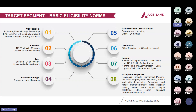Please pay attention to this slide — this is the basic eligibility norm for SBB, which remains almost the same throughout our product offerings. First is constitution: individuals, proprietorship, partnership, etc. Then turnover from 30 lakhs to 30 crores. Age norms: for secured products, 21 to 70 years; for unsecured, 24 to 65 years. Business vintage: 3 years in the current business. Residence and office stability: residence 12 months or office 24 months — this is an either-or situation.